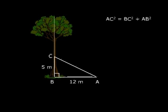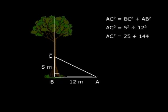Substitute the values. AC squared equals 5 squared plus 12 squared. So AC squared equals 25 plus 144 which is equal to 169.